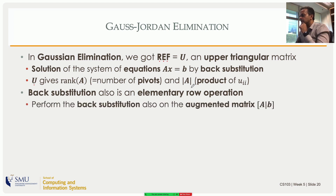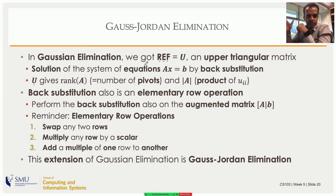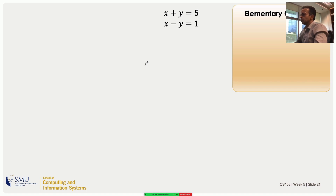If you perform the back substitution starting from the REF, that is Gauss-Jordan elimination. Gauss-Jordan elimination is the same as Gaussian elimination plus back substitution, so you get the solution in matrix form. For example, our equations: x plus y equals 5, x minus y equals 1.